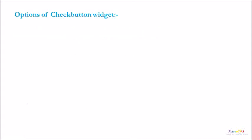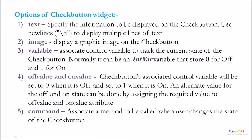There are various important options of the CheckButton Widget. The first one is Text — it specifies the information to be displayed on the CheckButton. Use new lines to display multiple lines of text. The second one is Image — it is used to display a graphic image on the CheckButton.